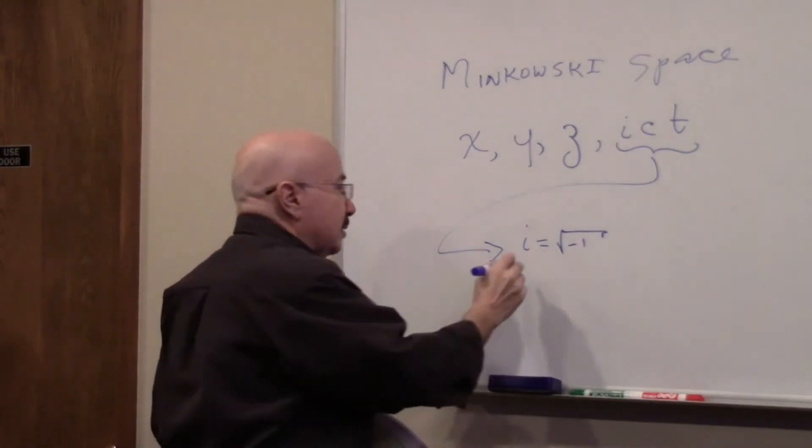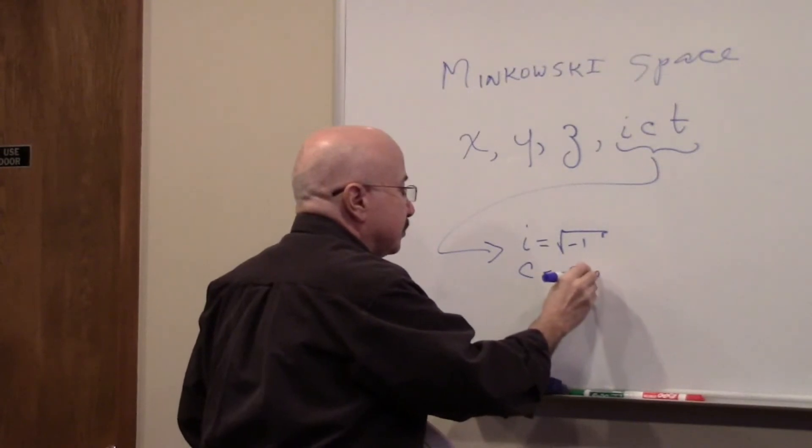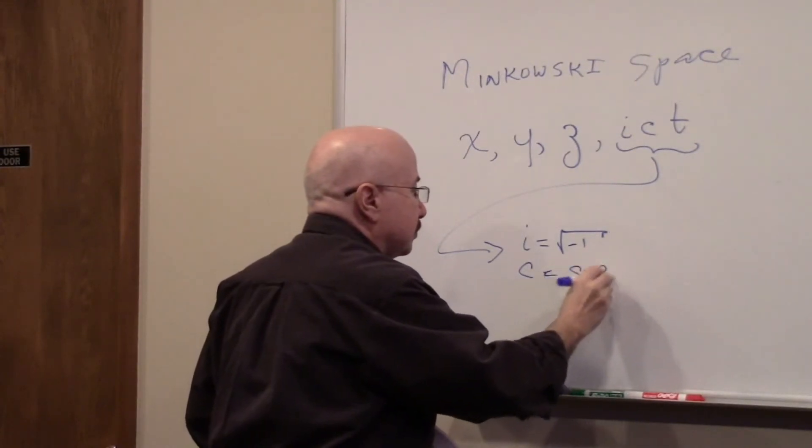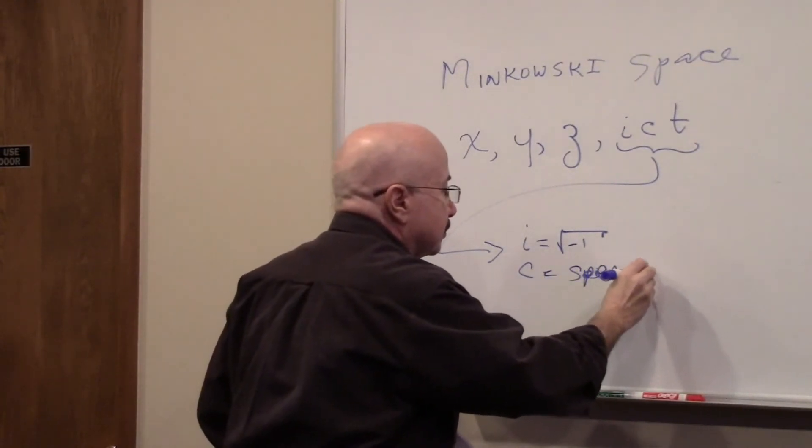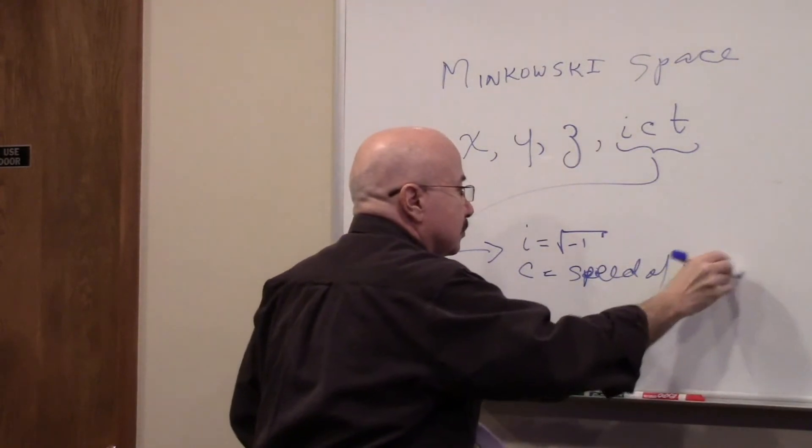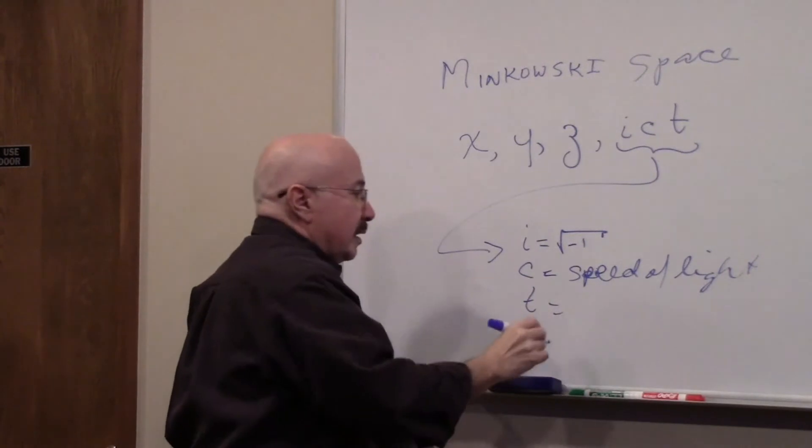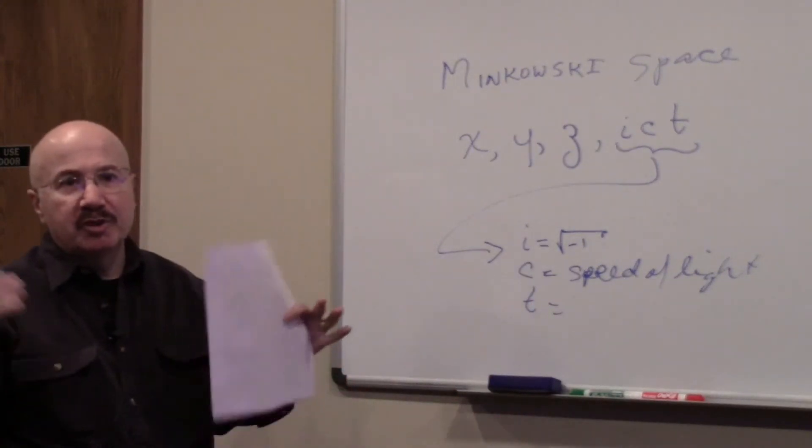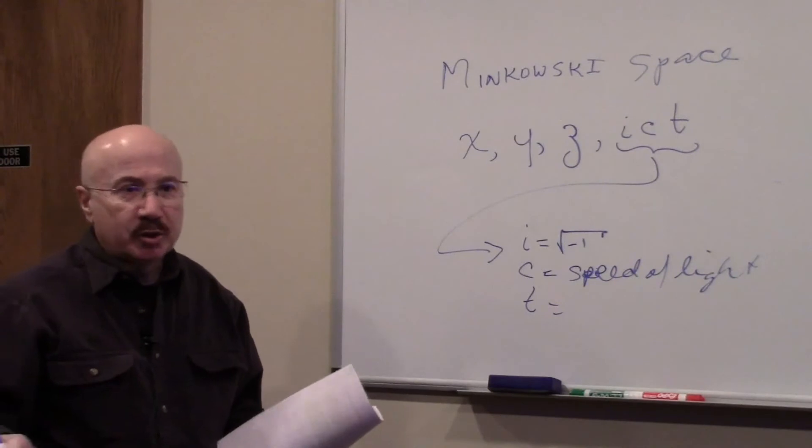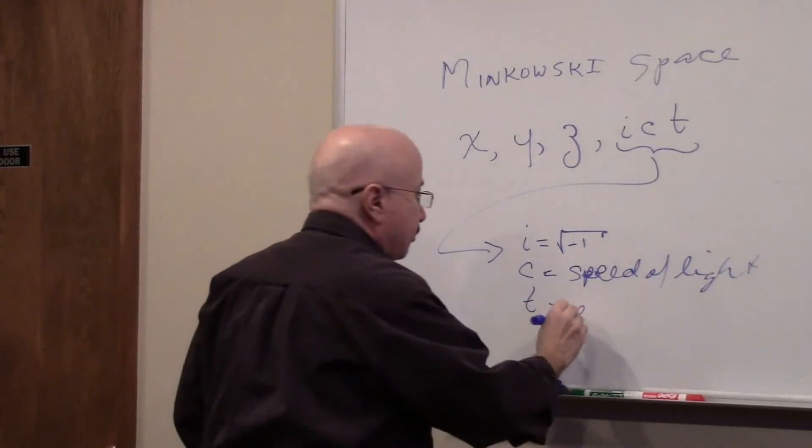So c is the speed of light in the vacuum. And t is actually time, the sequence of events, as measured with clock. So it's the sequence of events.